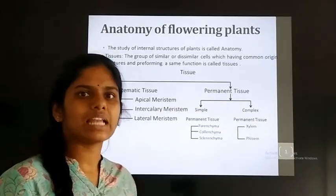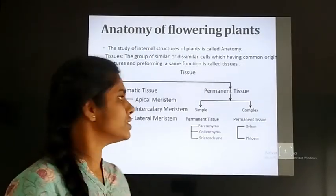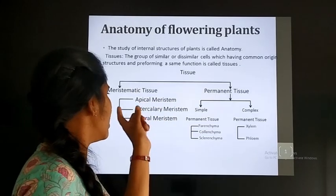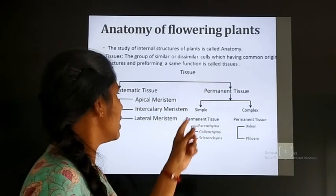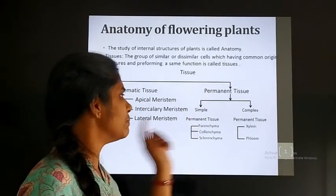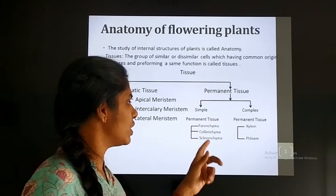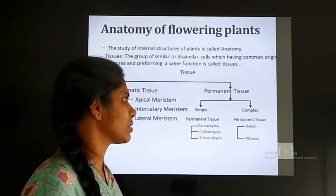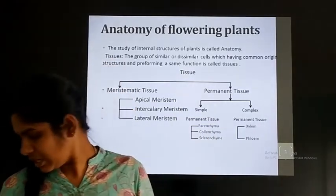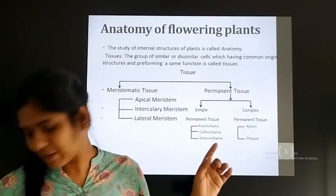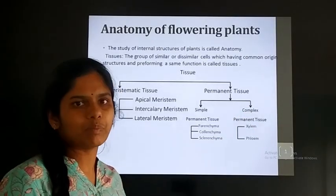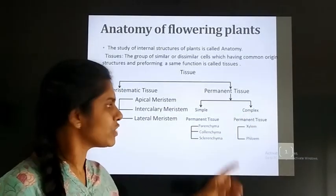Dear students, in the last class we studied about types of permanent tissue. That is simple permanent tissue: parenchyma, collenchyma, sclerenchyma. Another type of tissue is complex permanent tissue.